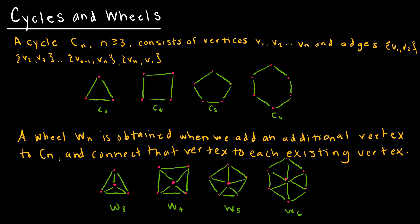Two other types of special graphs are cycles and wheels. A cycle can only occur when you have at least three vertices, which makes sense because if I had two vertices it would just be one edge connecting them.